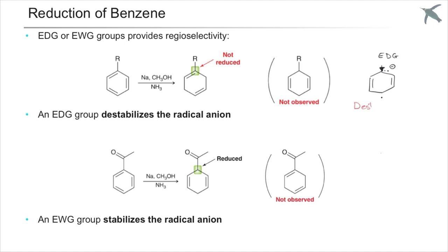Electron-donating groups push electron density on the ring, destabilizing the radical anion, so the carbon bearing the substituent is not reduced.